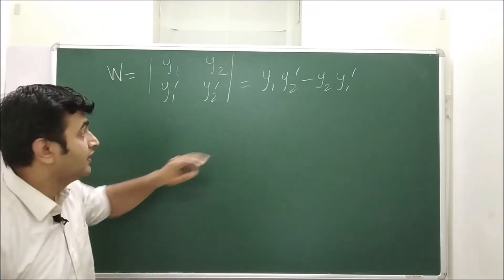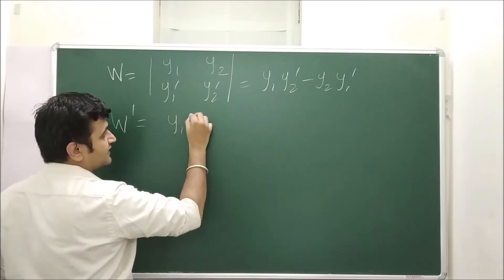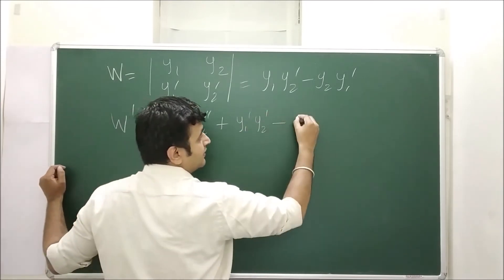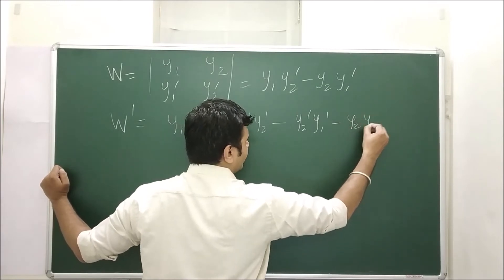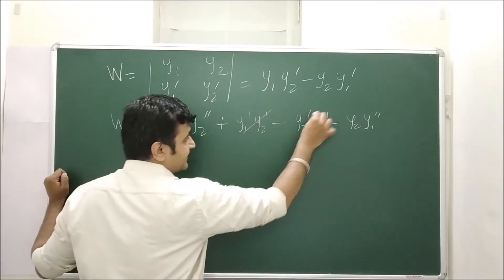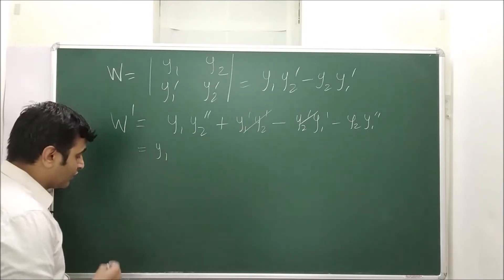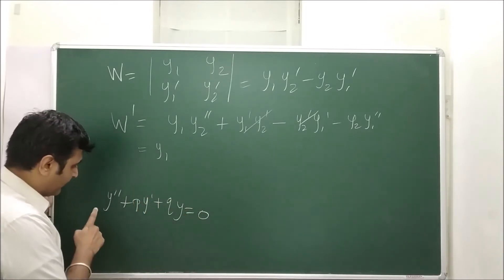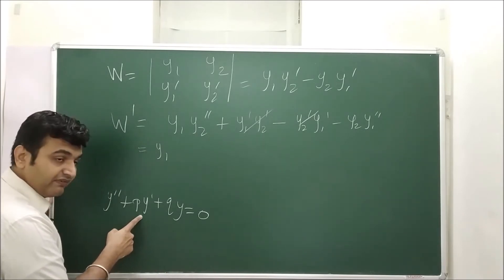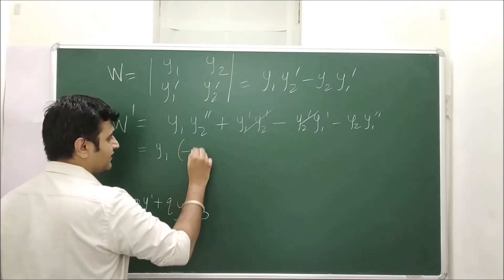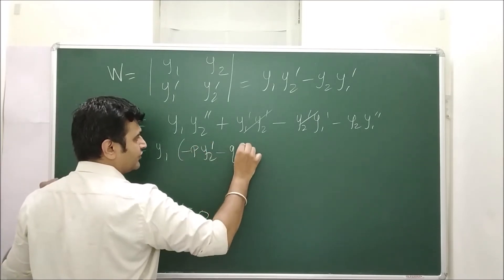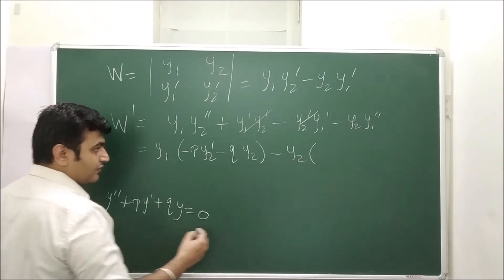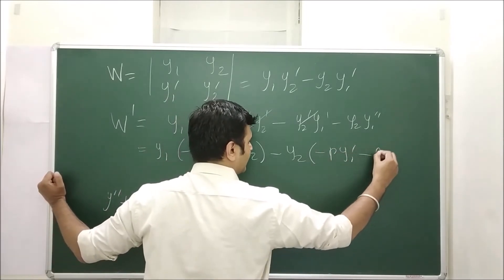The Wronskian W is defined as that determinant. Now, what is W prime? Applying the product rule: W' = y1·y2'' + y1'·y2' − y2'·y1' − y2·y1''. The middle terms cancel. Since y2 is a solution of the differential equation, y2'' = −p·y2' − q·y2. Similarly, y1'' = −p·y1' − q·y1.